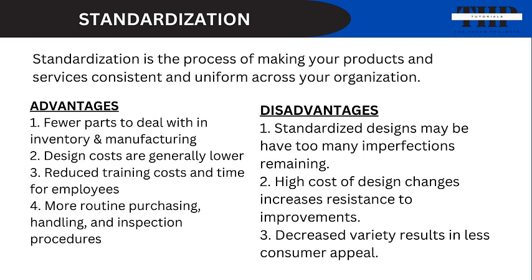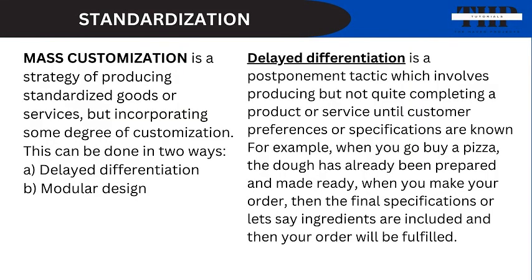There is a way to effectively mitigate the disadvantages of standardization: mass customization. This is a strategy of producing standardized goods or services but incorporating some degree of customization. This can be done in two ways: delayed differentiation and modular design. Delayed differentiation is a postponement tactic which involves producing but not quite completing a product or service until customer preferences or specifications are known. For example, when you go to buy a pizza, the dough has already been prepared and made ready. When you make your order, the final specifications or ingredients are included and your order is fulfilled. That's an instance of mass customization in the form of delayed differentiation.